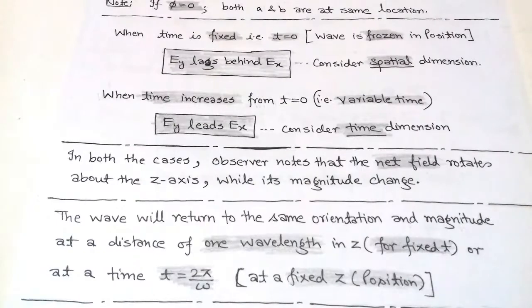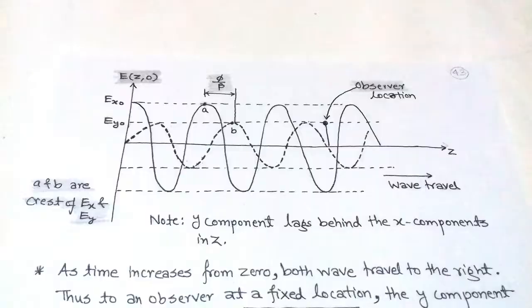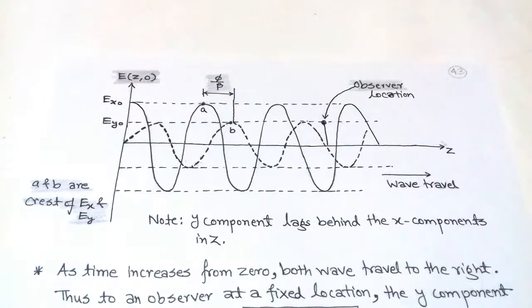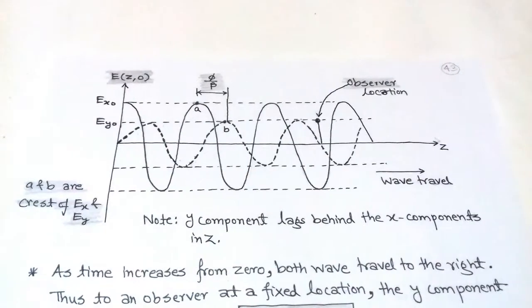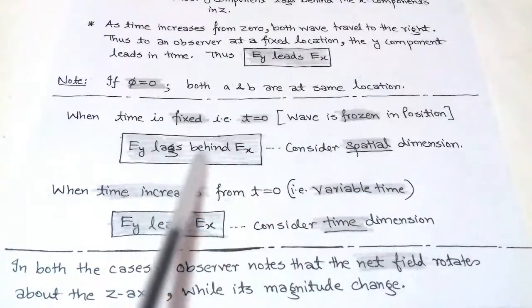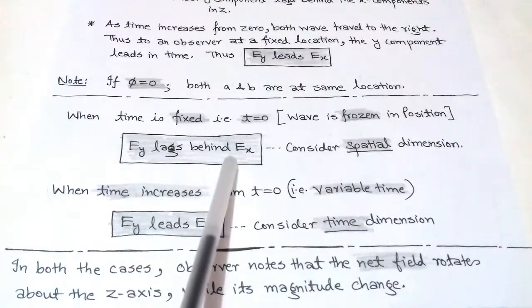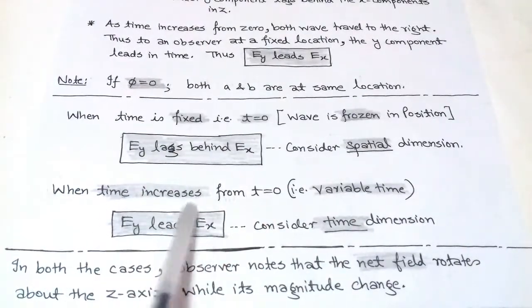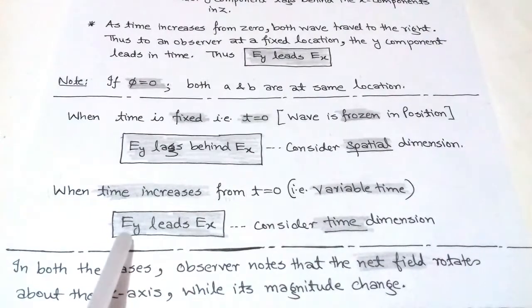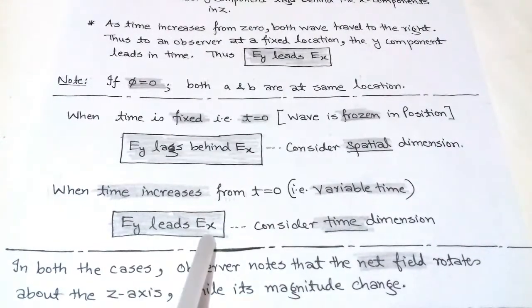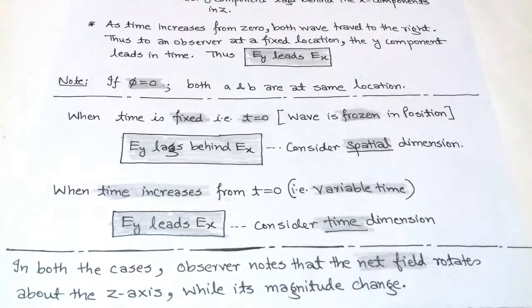In summary, this is about the effect of phase difference φ when φ is less than π/2 and the medium is lossless. The effect depends on time and position: when we fix the time, the Y component lags behind the X component; when we fix the position, the Y component leads the X component.